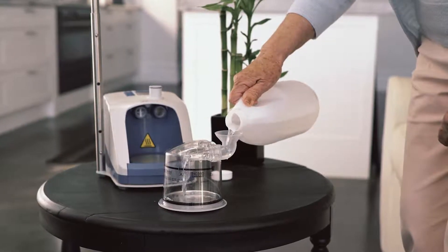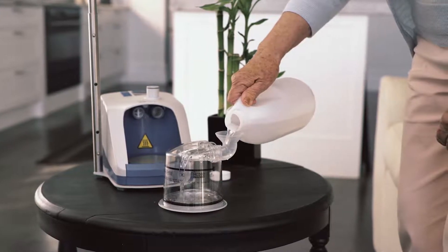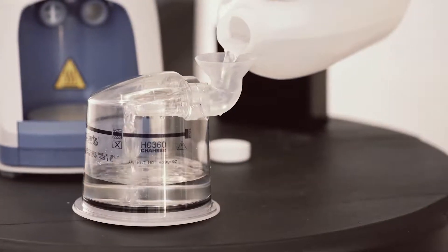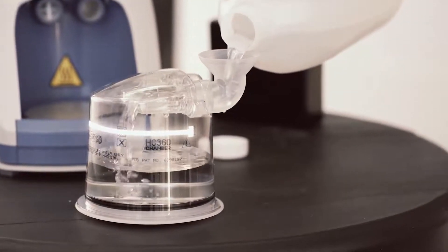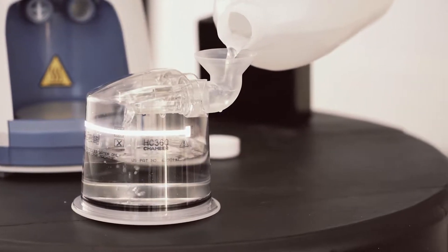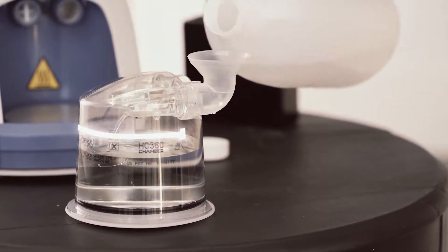With the aid of the supplied funnel, fill the chamber with enough distilled water for the period of use, but never above the maximum water level line. This is to prevent water spilling into the MyEvo2 when the chamber is installed.